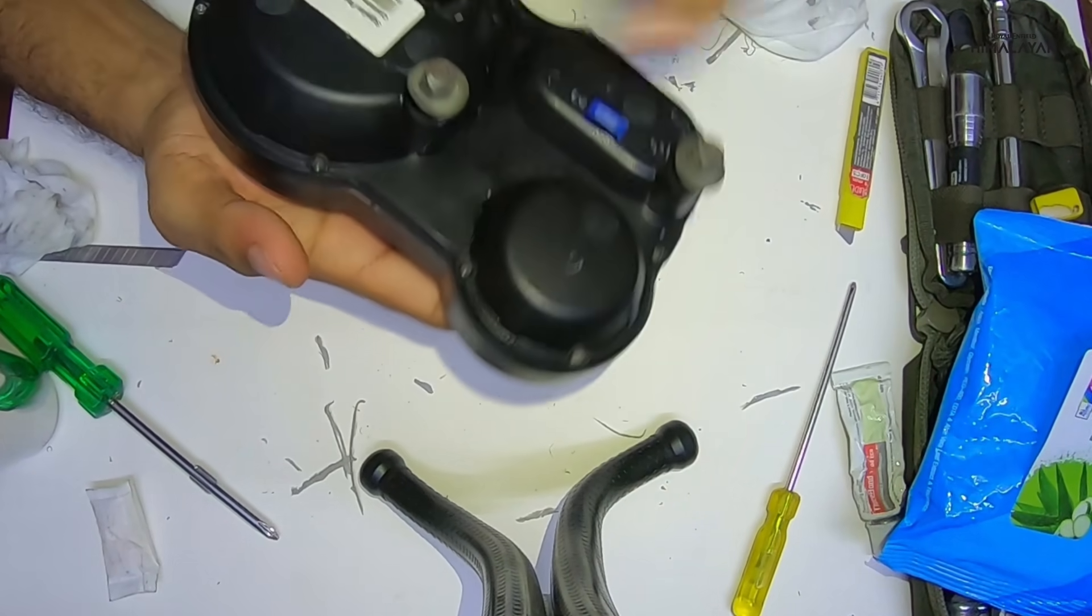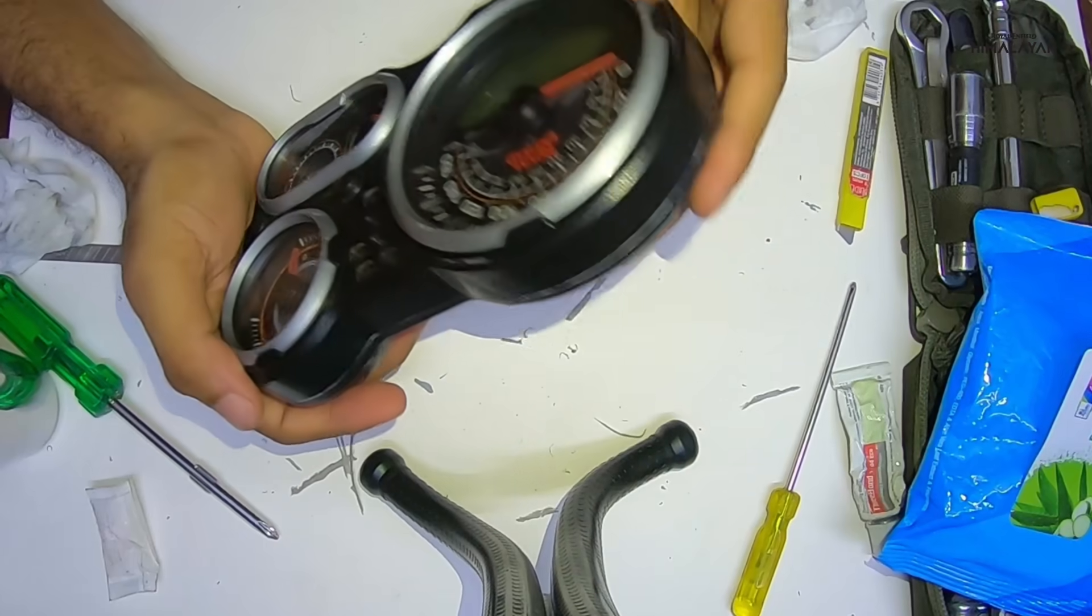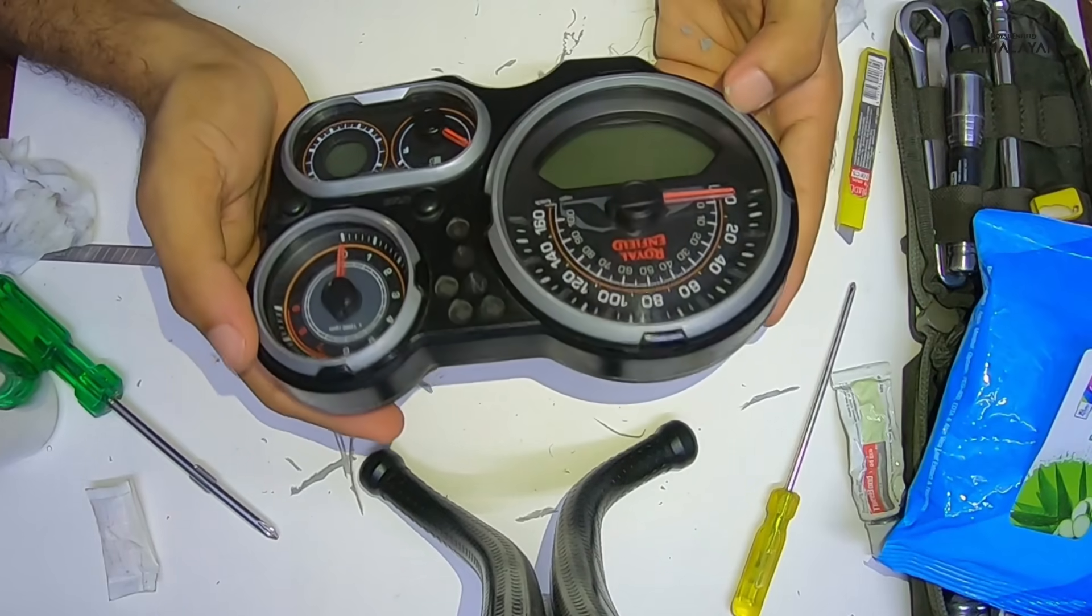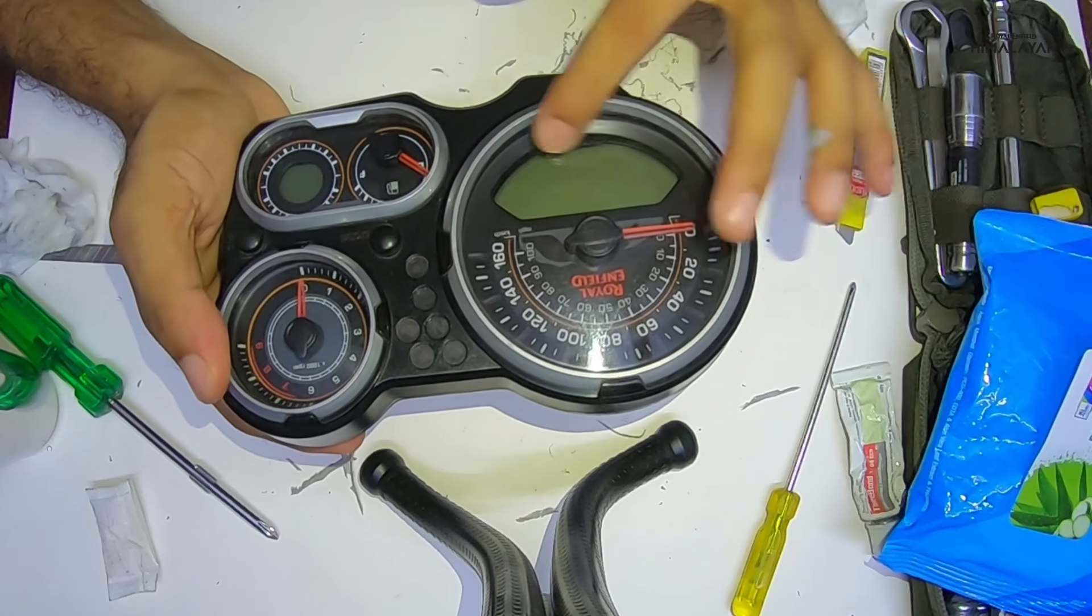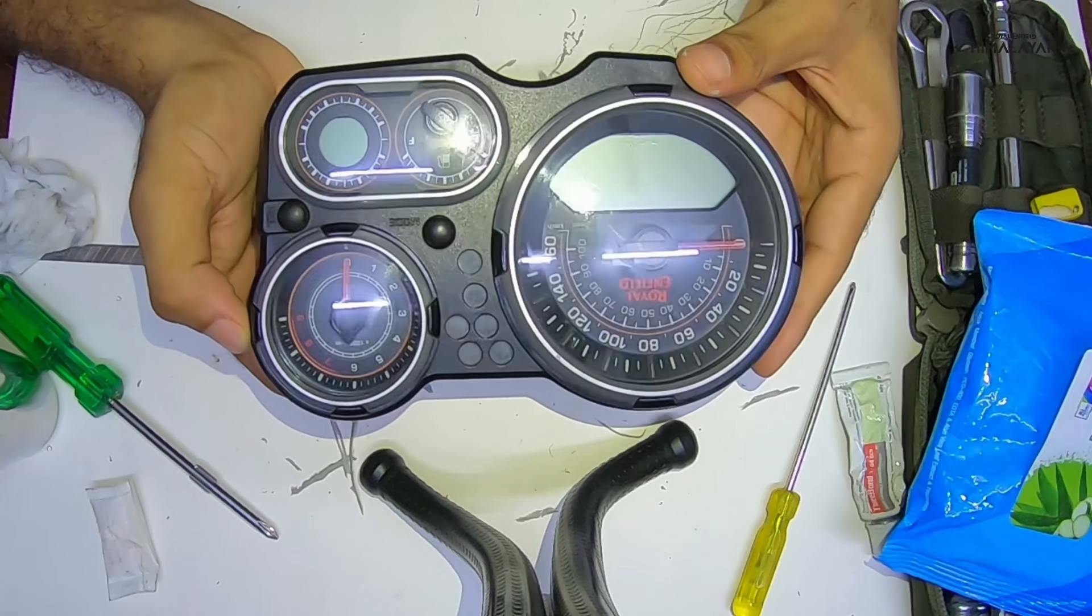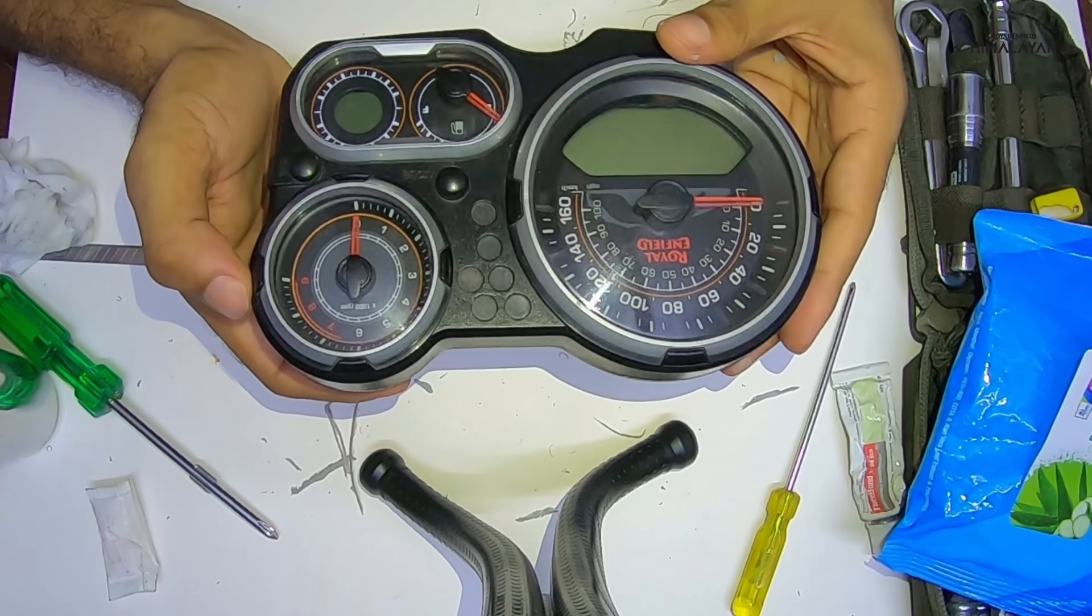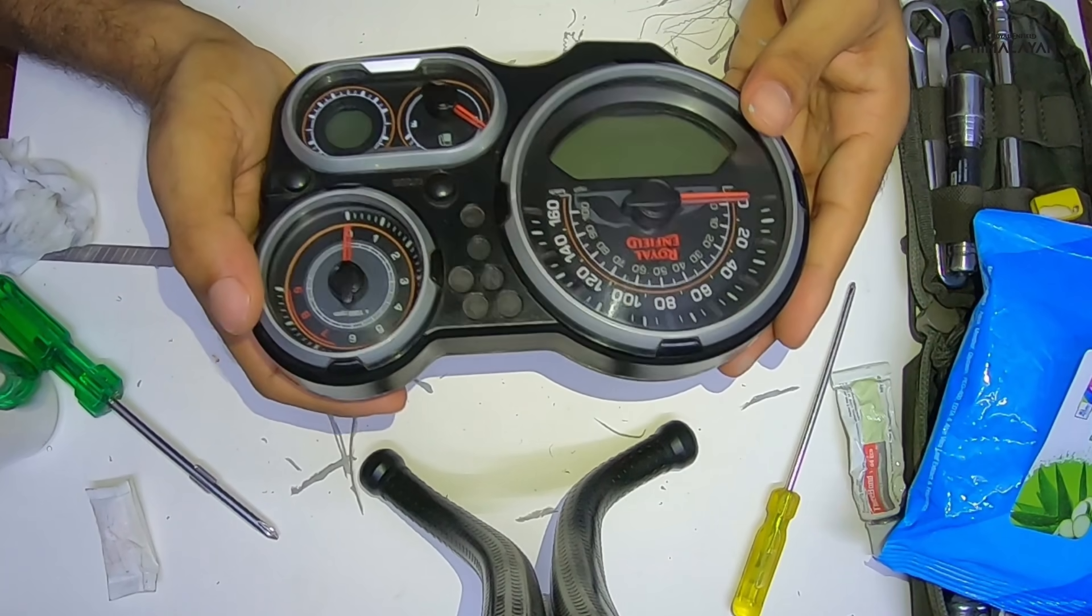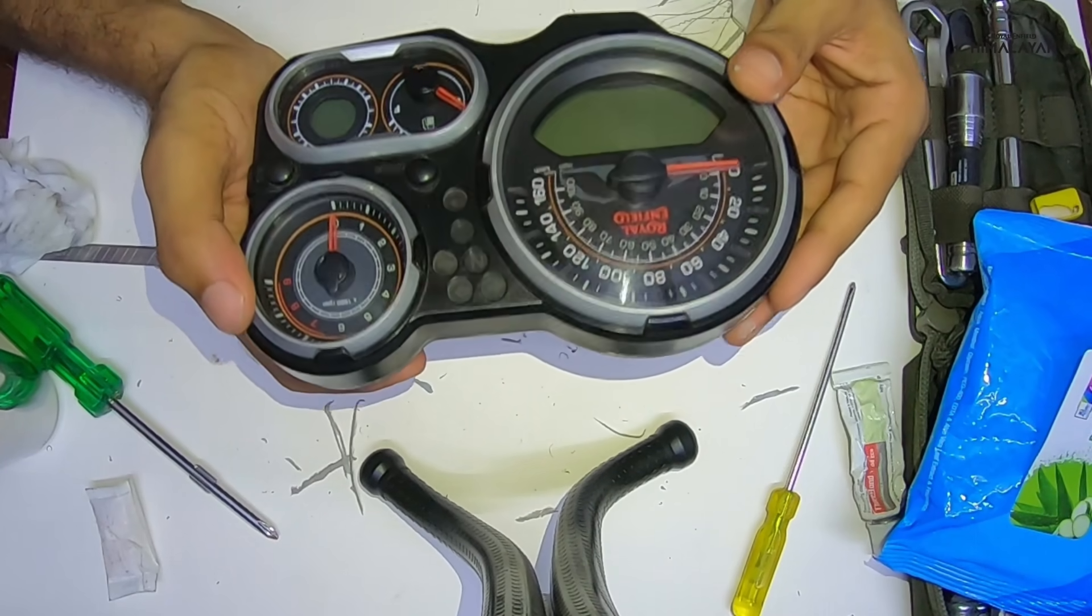That's how you go about fixing this issue which seems to be a universal problem. It's not just the Indian bikes, it's across the globe. Every single person who's owned a Himalayan would at some point of time find that water tends to seep in. I very strongly believe that this is a level one DIY. Anybody with some patience can go about fixing this.